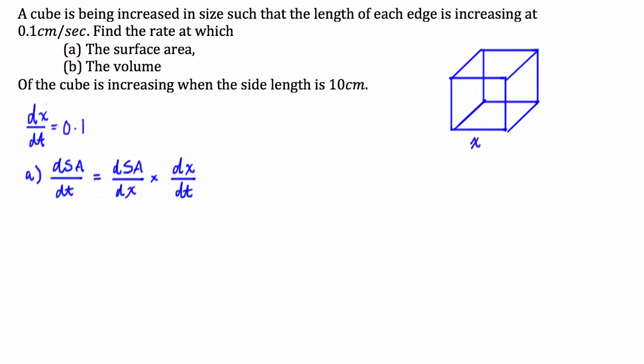So what we've got to do is we've got to find a function that relates surface area to the side length. Well that's quite easy. So we can see that the surface area of this cube here is going to be equal to, there are six sides, so six times the area of each side which is x squared. So SA = 6x².